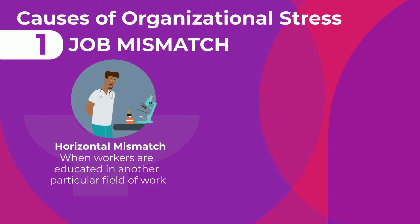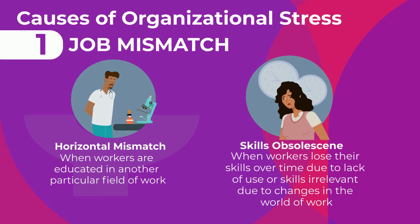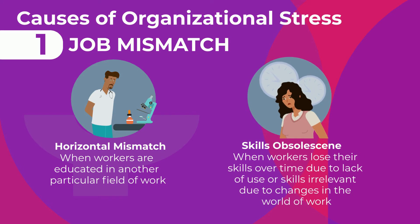The next example is horizontal mismatch. Horizontal mismatch is when workers are educated in another particular field of work. The next example is skills obsolescence. This is when workers lose their skills over time due to lack of use, or when skills become irrelevant due to changes in the world of work.